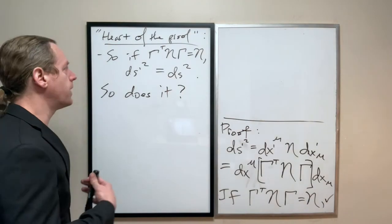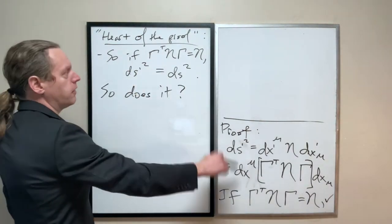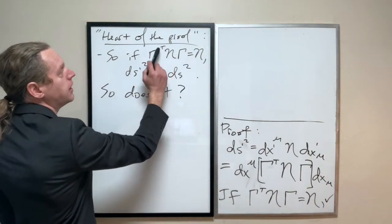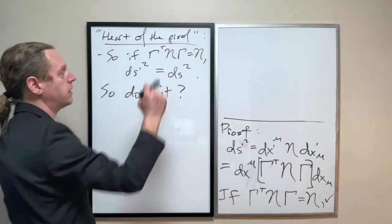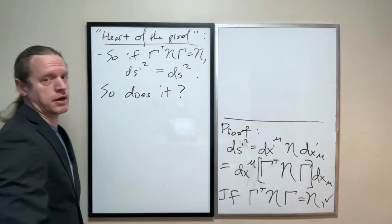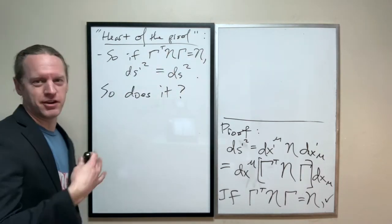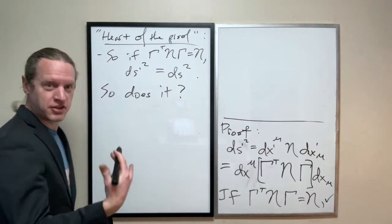So, okay. Now, again, as a reminder, we've gotten to the point where if that's true, if that combination is just eta, then we know what those space-time intervals have to match. And here's the nice easy part of it. Let's just evaluate it.